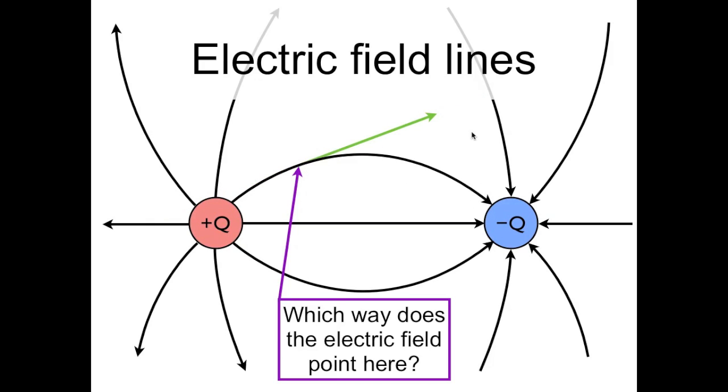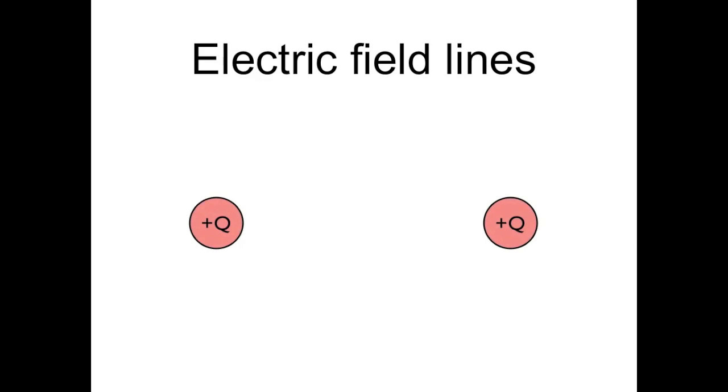Now let's look at another example, two positive charges. Here's the corresponding electric field. If the two charges are equal, the electric field is zero at the midpoint between them, and the field is also purely vertical along the midline between them.